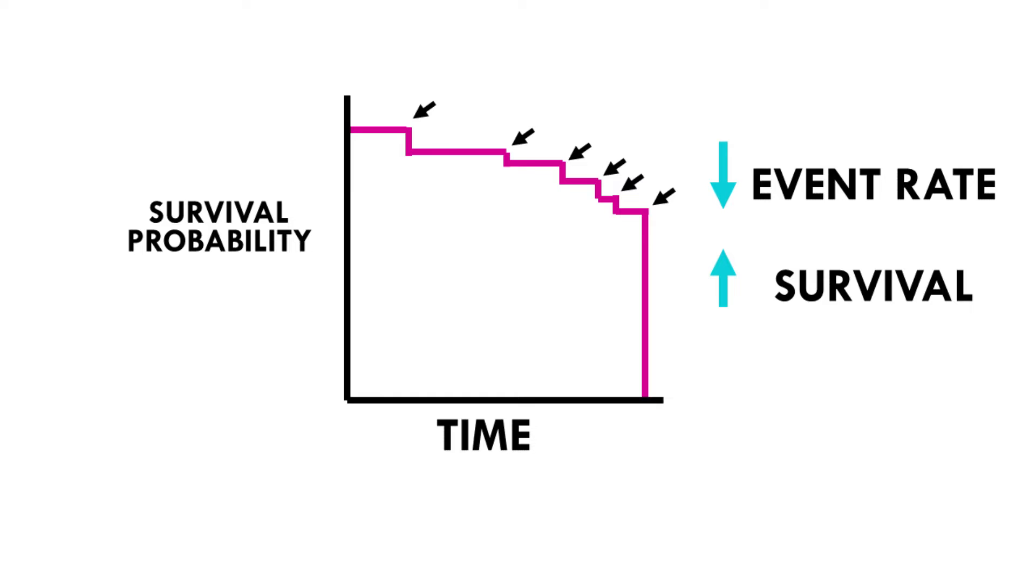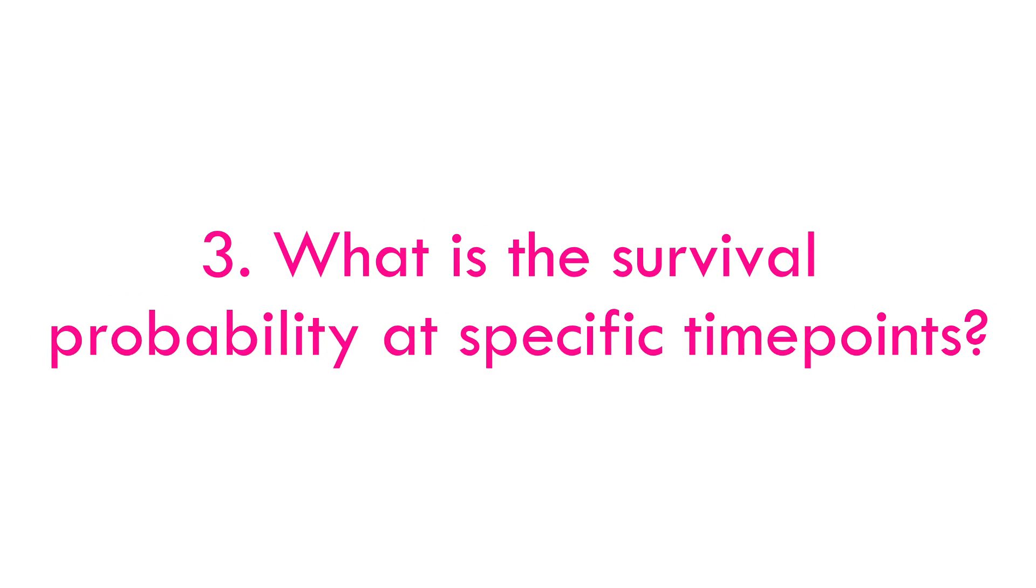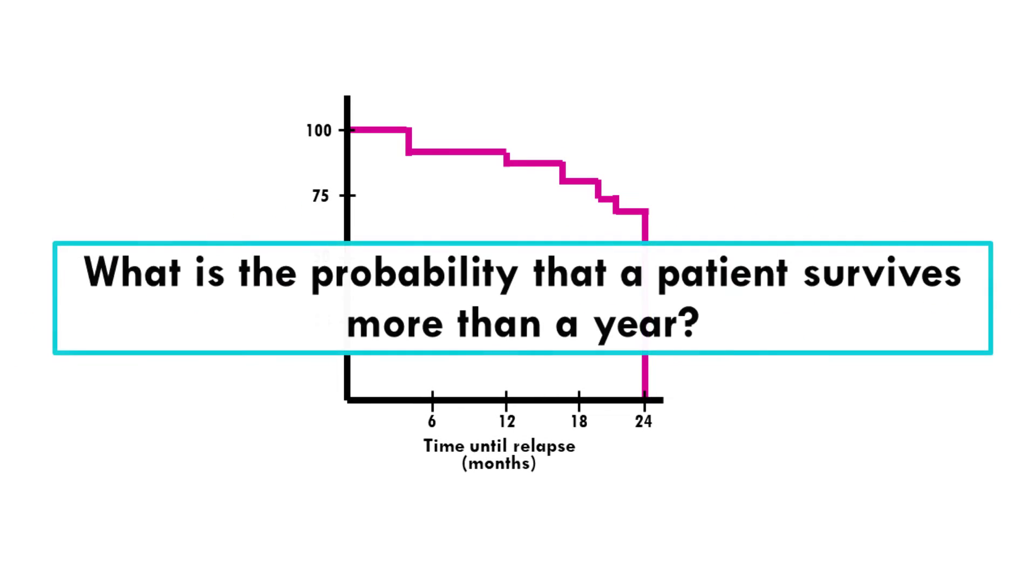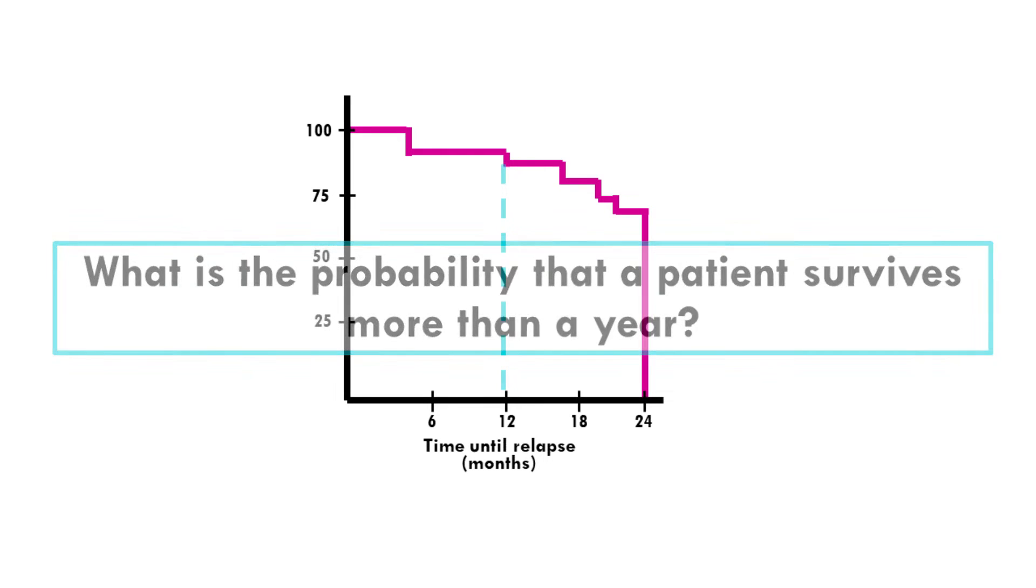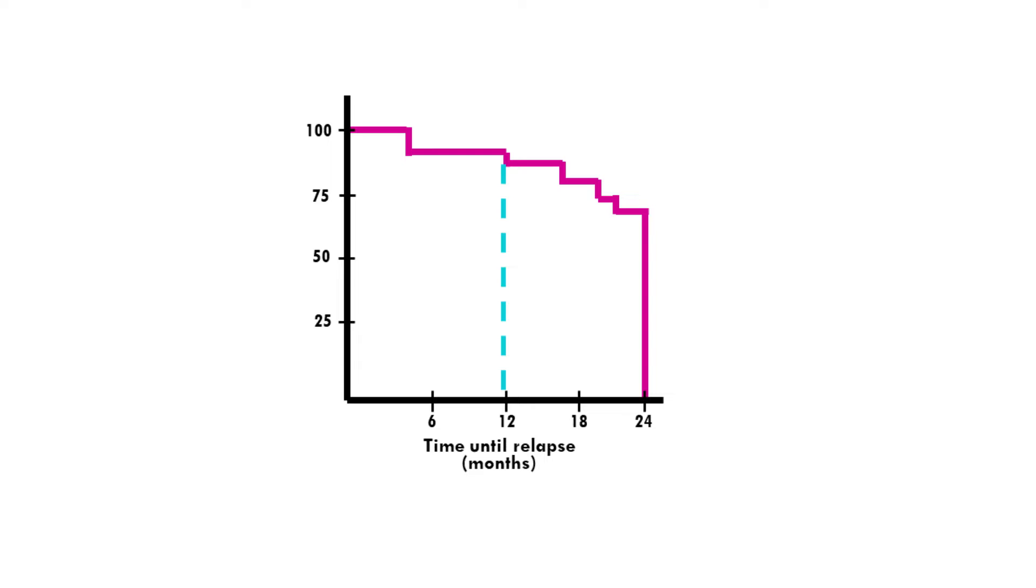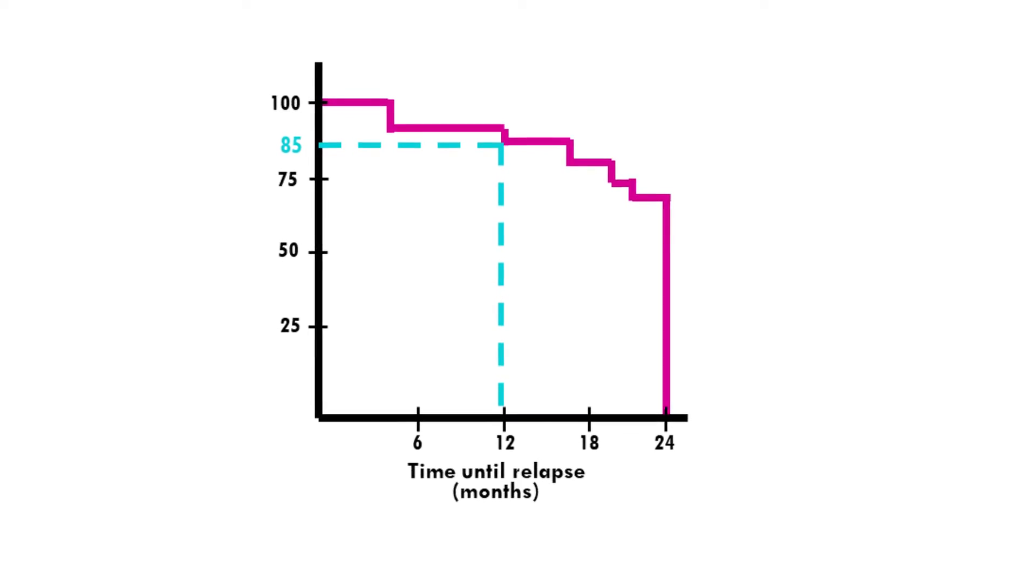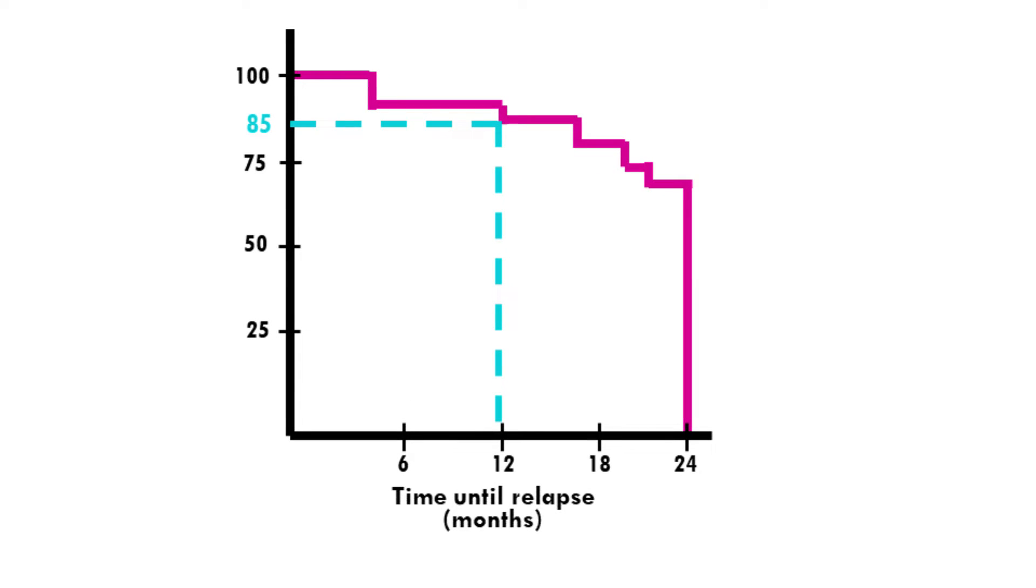We can always have a look at survival probability at specific time points. For example, what is the probability of a patient surviving 12 months after being diagnosed with lung cancer? At specific time points you can estimate the survival probability by locating the time point on the horizontal axis and dropping a vertical line to the curve, then read the survival probability from the vertical axis. For example, here we see the probability of a patient relapsing after 12 or more months is 85 percent, in other words, 15 percent of patients relapse within a year or less.